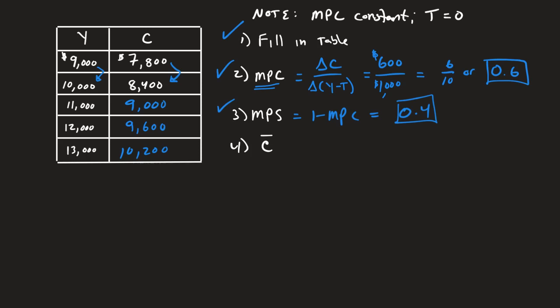Last but certainly not least is to figure out this level of autonomous consumption. In order to do that, we need to look back at our overall consumption function. So C is going to be C bar, our autonomous consumption, plus our level of MPC multiplied by our disposable income or Y minus T.